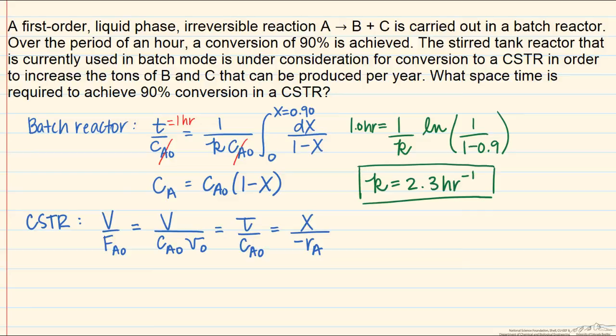The next is again expressing the rate as a function of concentration. This is still a first order reaction system, and so we can write that this is equal to X over KCA. And finally, we want to express the concentration of A in terms of X, and that also has the same form as in the first part of the problem. So we get KCa0 times 1 minus X.